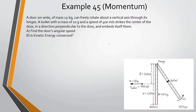A door 1 meter wide — this is the bird's eye view — with a mass of 15 kilograms, can freely rotate about a vertical axis through its hinge. A bullet with a mass of 10 grams (0.01 kilograms) and a speed of 400 meters per second strikes the center of the door in a direction perpendicular to the door and embeds itself. Find the door's angular speed after being hit.